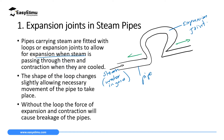When the steam is not passing, this loop also will change shape in a way that it allows the pipe to contract and move inwards, hence avoiding breakage. It is important to note that without this loop, the pipe is likely to break due to the force caused by expansion and contraction of the pipe.